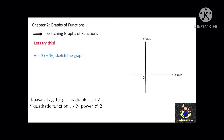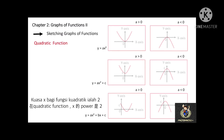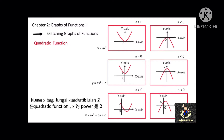Let's see some graphs of quadratic functions. The highest power of x for a quadratic function is 2. For example, y = ax², y = ax² + c, and y = ax² + bx + c. When a is greater than 0, the curve will be a U-shape. On the other hand, when a is less than 0, the curve will be an inverted U-shape. And c is the y-intercept.